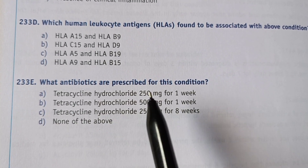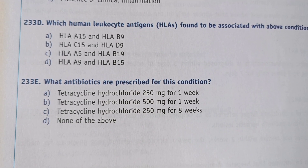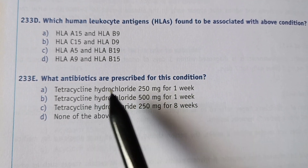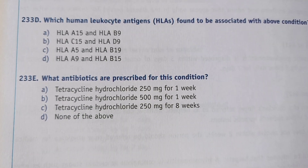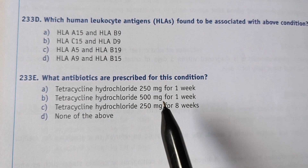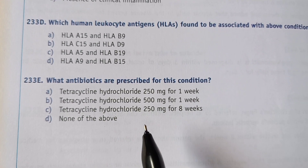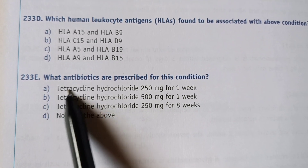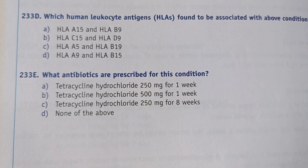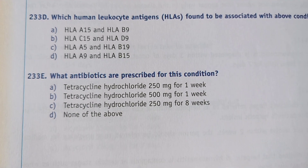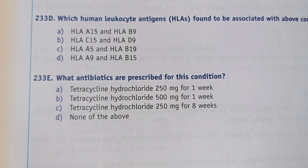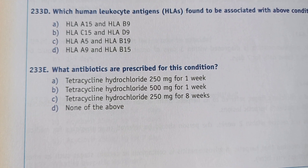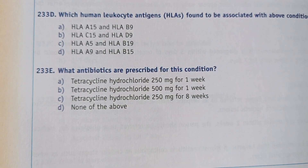Next question: what antibiotics are prescribed for localized aggressive periodontitis? Options are: A) tetracycline hydrochloride 250 mg for one week, B) hydrochloride 500 mg for one week, C) hydrochloride 250 mg for eight weeks, D) none of the above. The right answer is option A — tetracycline hydrochloride 250 mg for one week. Generally, we give 250 mg of tetracycline hydrochloride four times daily for at least one week.